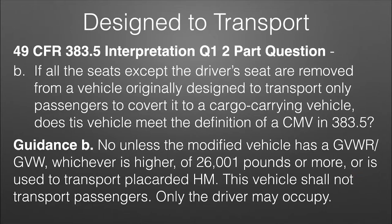If you look at my Class B commercial motor vehicle video, that heavy poundage over 26,000 pounds is going to require a Class B CDL. So as long as it's a smaller vehicle, it's now just a property carrying vehicle. The guidance continues: or is used to transport placardable hazmat. The vehicle shall not transport passengers — only the driver may occupy it. So if we remove all seats except the driver's seat and use it only for cargo, it becomes a non-CDL vehicle — as long as it's not over 26,000 pounds and not carrying placarded hazmat.